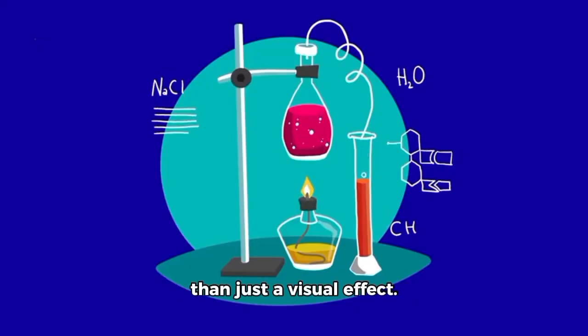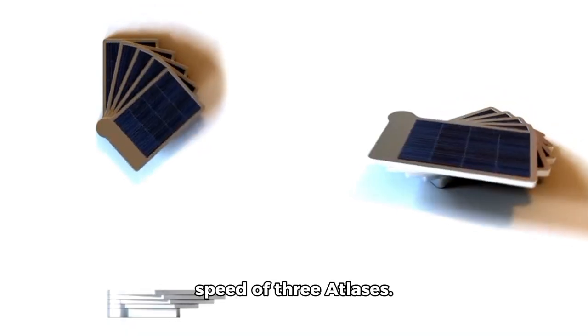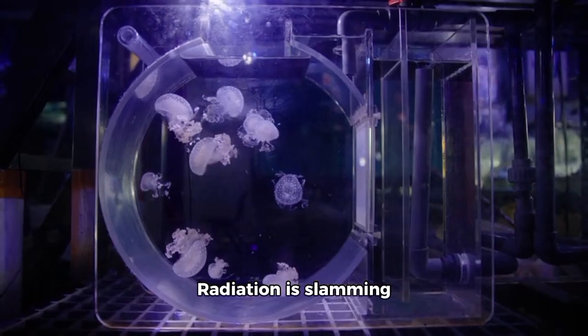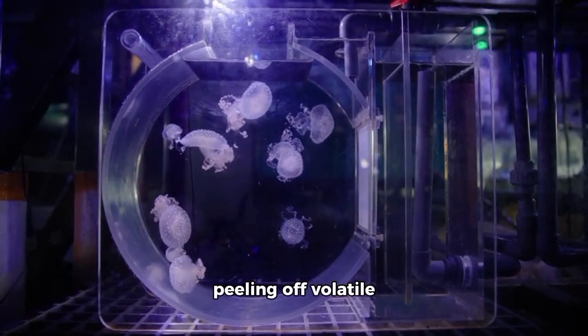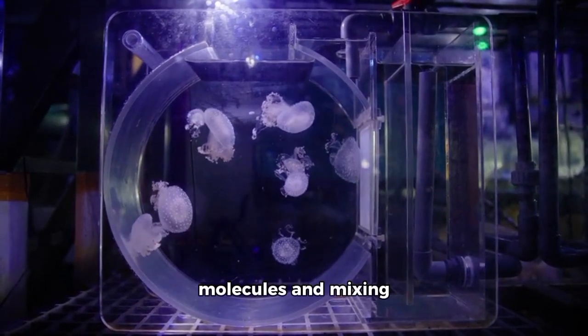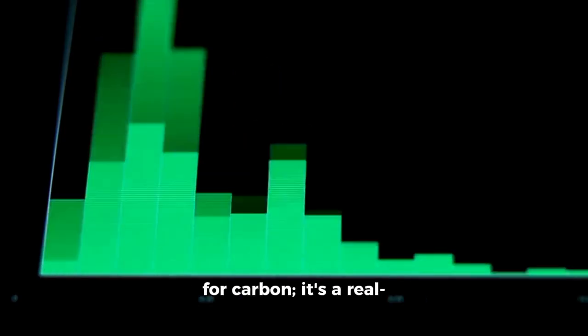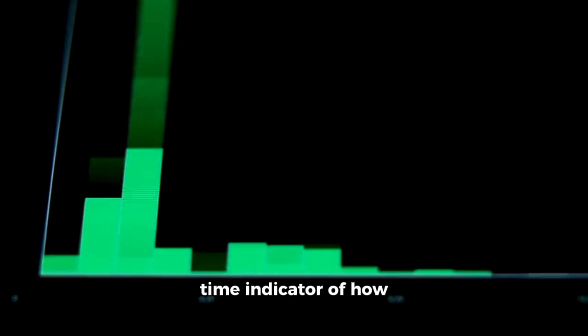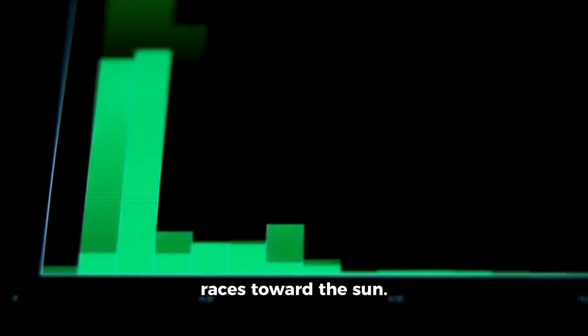The chemistry here is more than just a visual effect. Solar radiation is slamming into fresh ices and dust at an accelerated rate, peeling off volatile molecules and mixing them into the coma. As a result, the green color isn't just a marker for carbon. It's a real-time indicator of how quickly the comet's surface is changing as it races toward the sun.